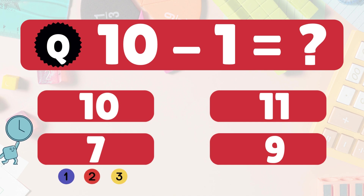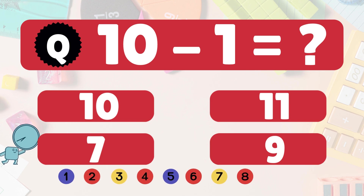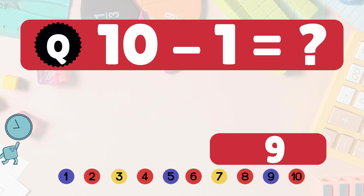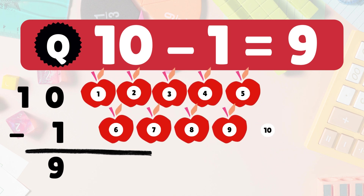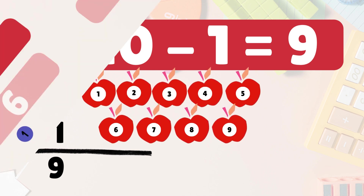Next: 10 minus 1 equals what? 10 minus 1 is 9. Here we have 10 apples. Take 1 away. 9 apples left: 1, 2, 3, 4, 5, 6, 7, 8, 9. So 10 minus 1 is 9. Well done.